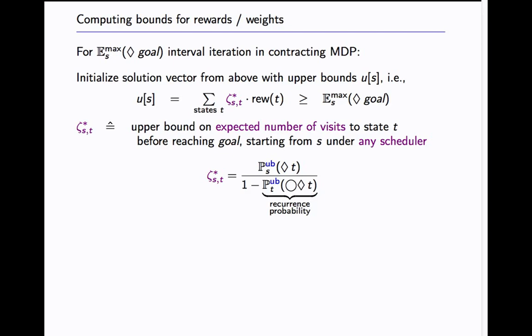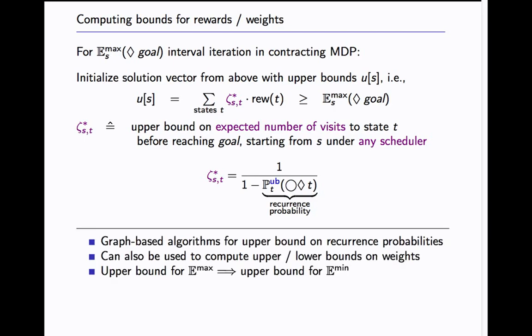We need to initialize the solution vector from above with some upper bounds that is larger than E_max. To do this we use the following trick that we use an upper bound on the expected number of visits to state T under any scheduler before it reaches goal. Then we can just multiply this with a reward for this state and do the sum and get some upper bound. We can do this by providing an upper bound for the probability starting from S to go to reaching T and providing an upper bound on the recurrence probability. So I'm in state T and I want to know what's the probability of going back to T. We know because it's contracting that this has to be less than one.